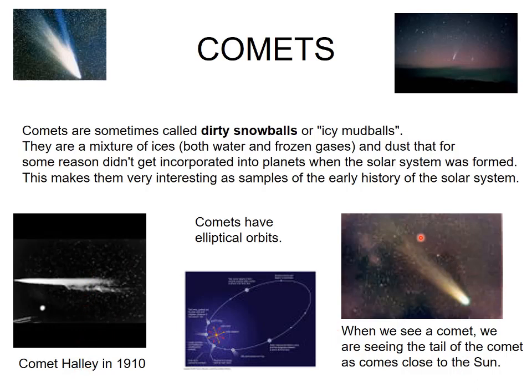When we see a comet, we are actually seeing the tail of the comet as it comes close to the Sun. The tails of the comet become visible because they come very close to the Sun, and due to the reflection of sunlight on the comet's tails, we can clearly and easily visualize them.